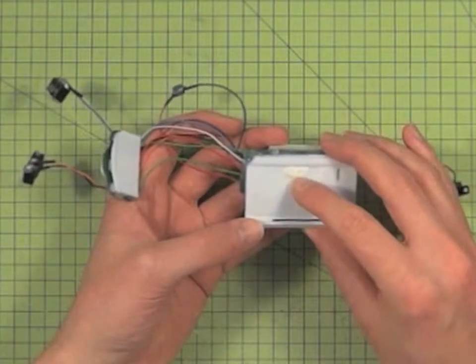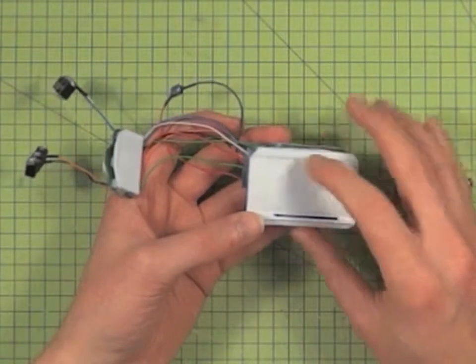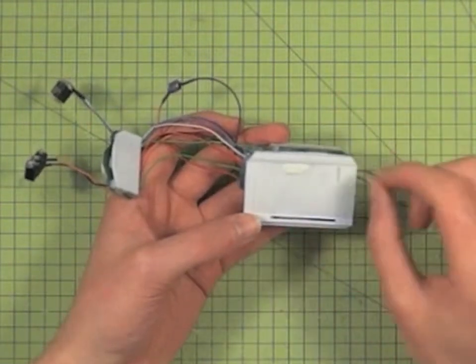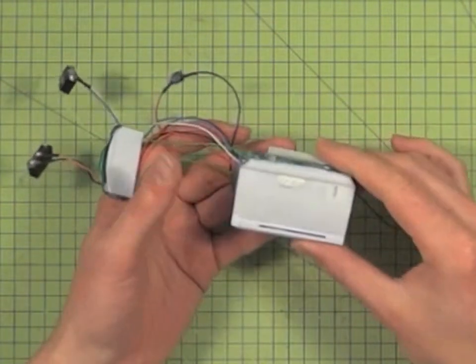Another thing I did was use White-Tac, similar to Blu-Tac, just to cover the sensor. Again, at the end I'll pluck that out and it should be nice and clean.